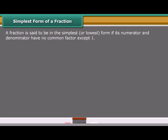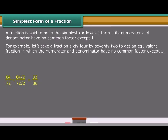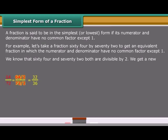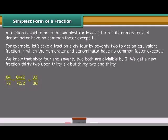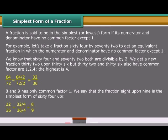Fraction is said to be in the simplest or lowest form if its numerator and denominator have no common factor except one. For example, let us take a fraction 64 by 72. To get an equivalent fraction in which the numerator and denominator have no common factor except one, we know that 64 and 72 both are divisible by two. We get a new fraction 32 upon 36. But 32 and 36 also have common factors 1, 2, 4. The highest is 4. 8 and 9 has only common factor 1. We say that the fraction 8 upon 9 is the simplest form of 64 upon 72.